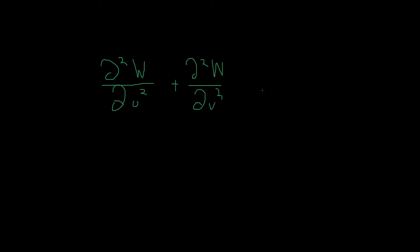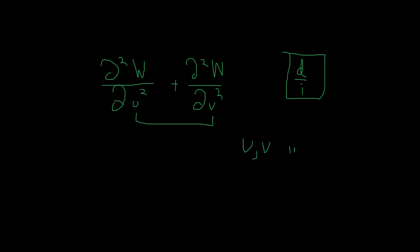Now let's look at a partial differentiation example. Remember D-I — dependent, independent. With partial differentiation, equations usually have two independent variables. So we have u and v as independent variables, and w is going to be our dependent variable. That's all you really need to know about this problem.